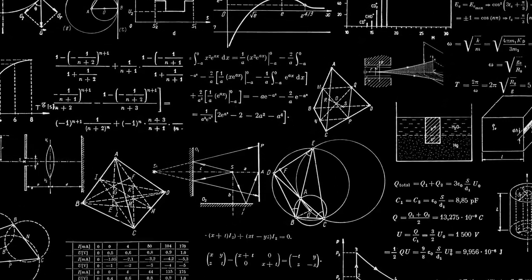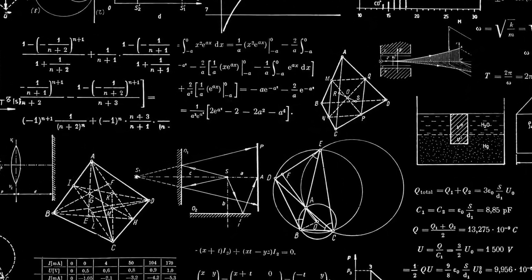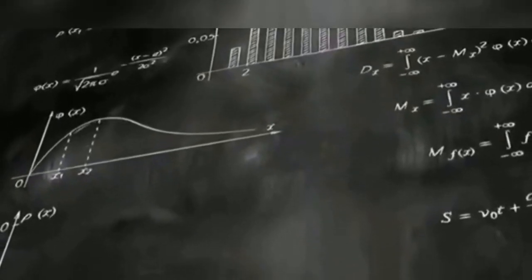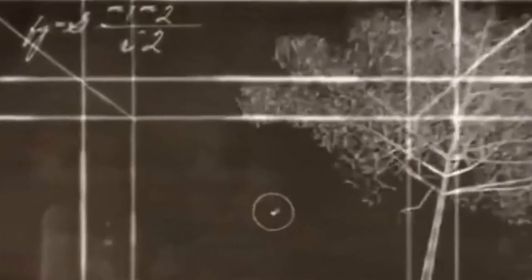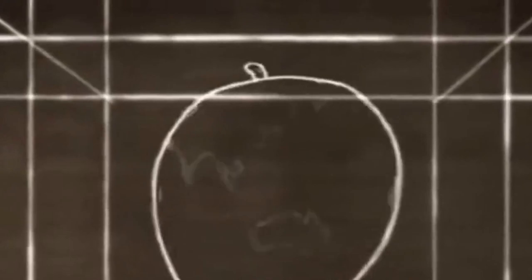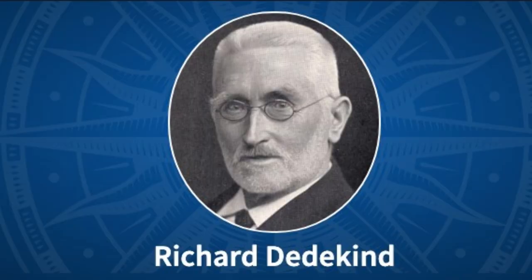Mathematicians from around the world have achieved a groundbreaking breakthrough in the field of mathematics. They have finally solved a perplexing problem that has confounded the mathematical community for years. The focus of their efforts was on the elusive 9th Dedekind number.